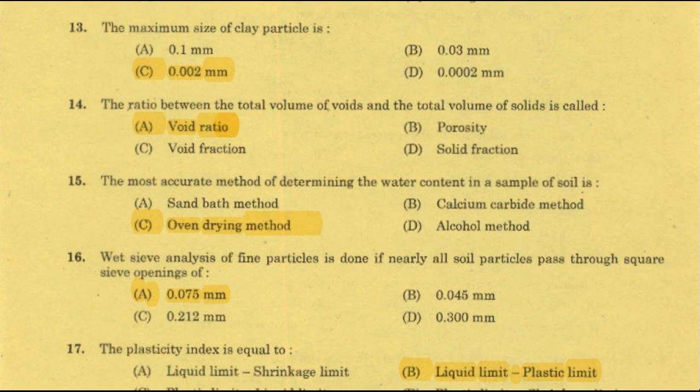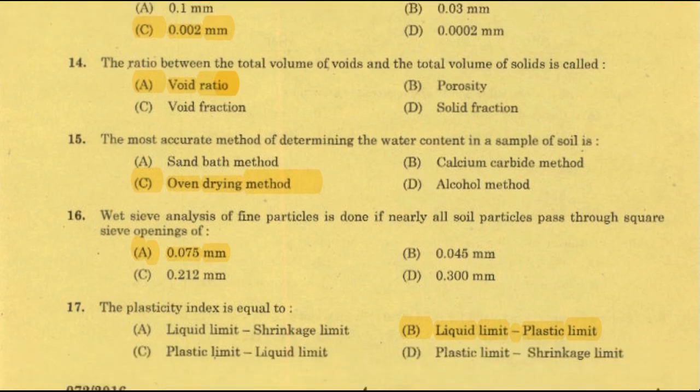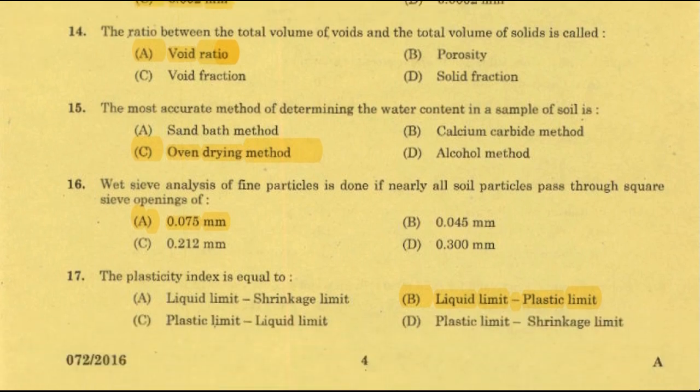Next question: The ratio between the total volume of voids and the total volume of solids is called void ratio — option A, right answer. Void ratio is denoted by e. e equals volume of voids divided by volume of solids. e is always greater than 0. The upper limit of void ratio value is infinite — there is no upper limit.